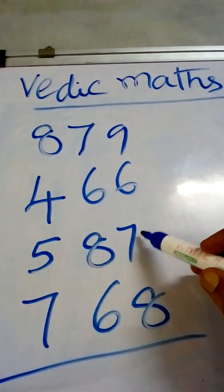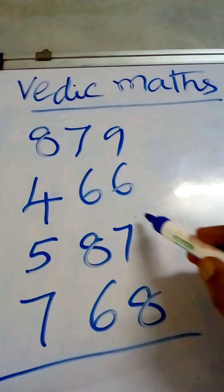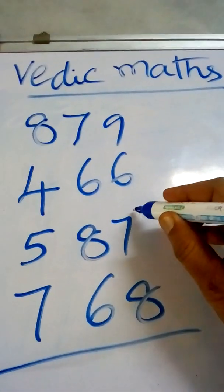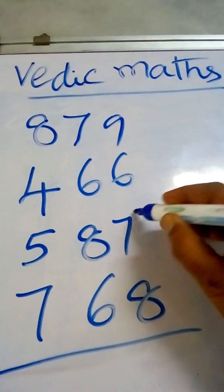8 plus 7 is equal to 15. In 15, we have 10th place. 10th place means 1. 1 is represented as dot.